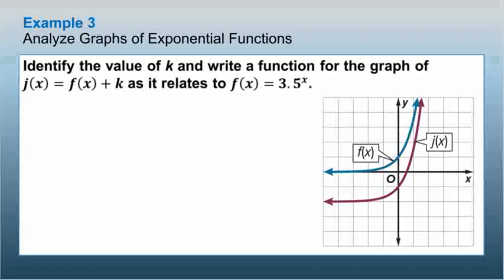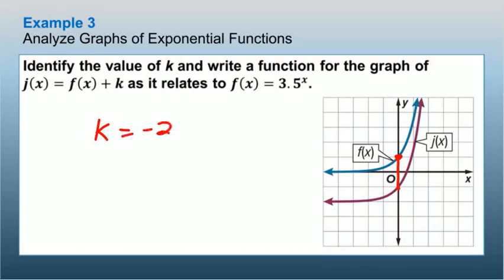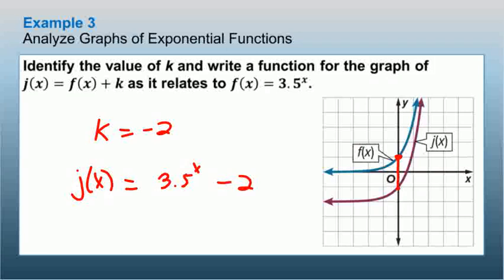Example 3: analyze the graphs of exponential functions. We need to identify k and write the function for j(x) = f(x) + k, as it relates to f(x) = 3.5^x. Looking at the graph, the function went down 2, so k = −2. Therefore j(x) = 3.5^x − 2.